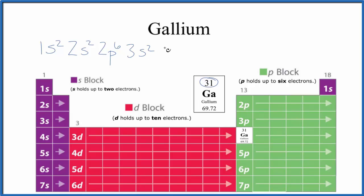Then 3s2. From 3s2, we go to 3p6 again. So far, we've used 18. Then go to 4s2. And from 4s2, we go to 3d. And d can hold up to 10, so we're going to put 10 in here for d.